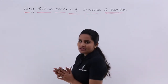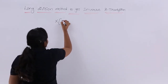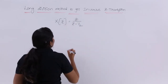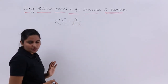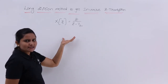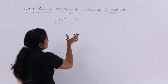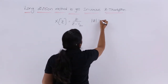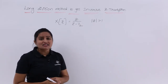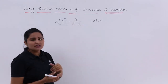The long division method is just like normal division. For example, if you are given X of Z and asked to find the inverse Z transform, you know the inverse Z transform of Z divided by (Z minus 1/2). But without shortcut formulas, you can use the long division method. Here the Z transform is given with ROC mod Z greater than 1, which indicates a causal system. The transform is Z by Z minus 1/2.